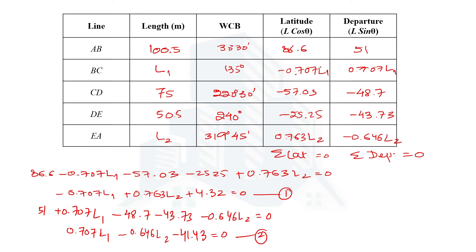This works because the bearing happens to give one negative and one positive coefficient. If both were positive or both negative, the approach would still work — for example, bearings at 45°, 135°, 225°, 315° give symmetric advantages. If the coefficients are not equal, you would multiply each equation by the other's coefficient of L2 to eliminate it — a standard algebraic method. Here, however, we have the direct advantage of equal coefficients.